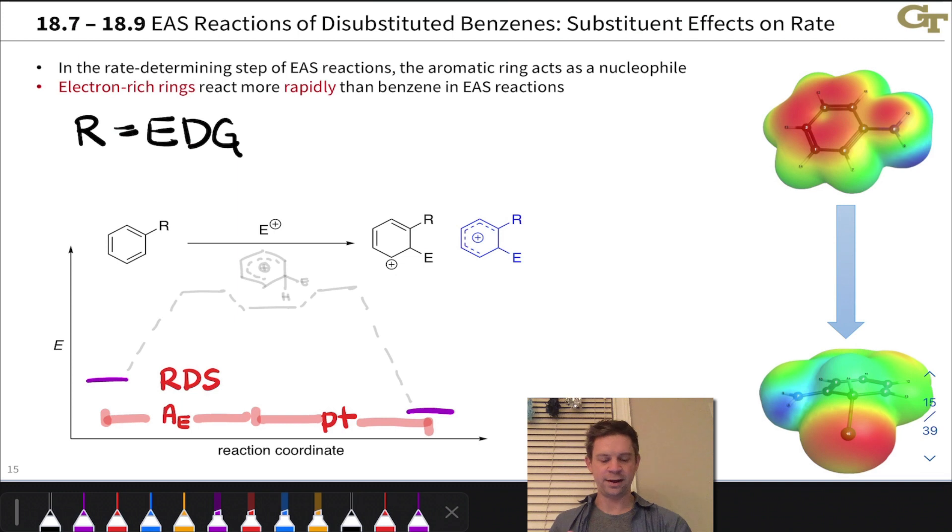The important conclusion for this video is that the first step is rate-determining. So as far as effects on rate, everything's going to pertain to this first step, coordination of the electrophile E+ to the aromatic ring. The proton transfer has nothing to do with any differences in reaction rate between benzene and a substituted benzene.